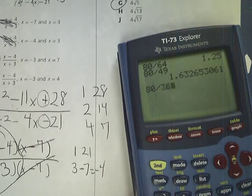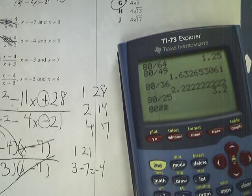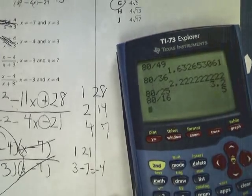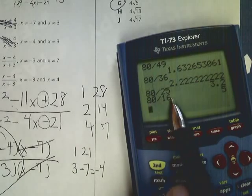Then I'll do the next one down, would be 7 times 7, which is 49. No. 36, no. 25, no. 16, yep. So I wanted to go all the way down, so I'm breaking 80 into 16 times 5.